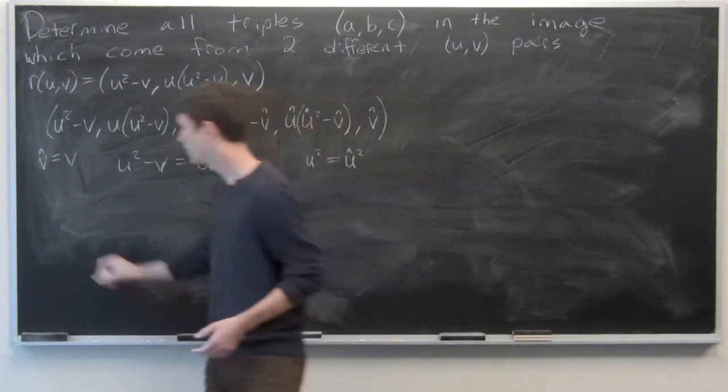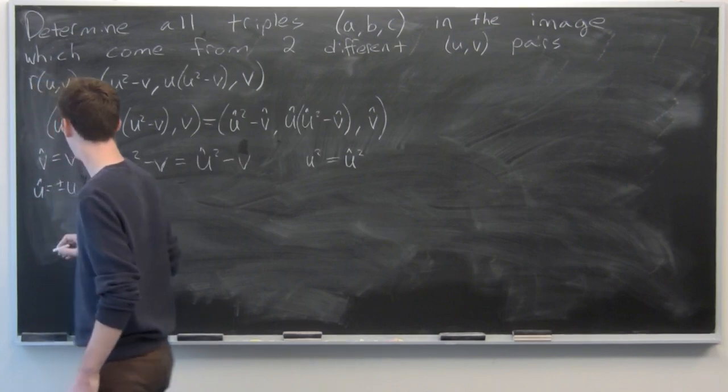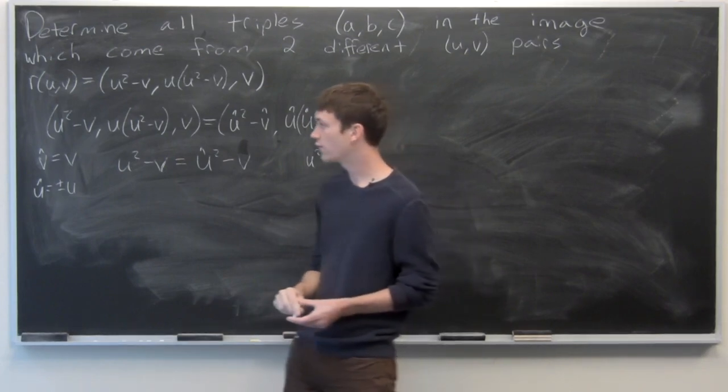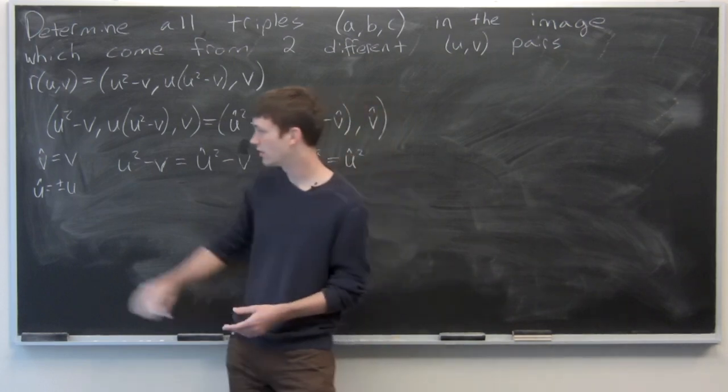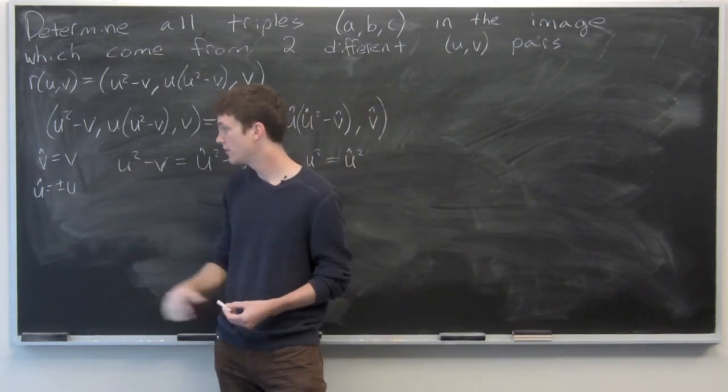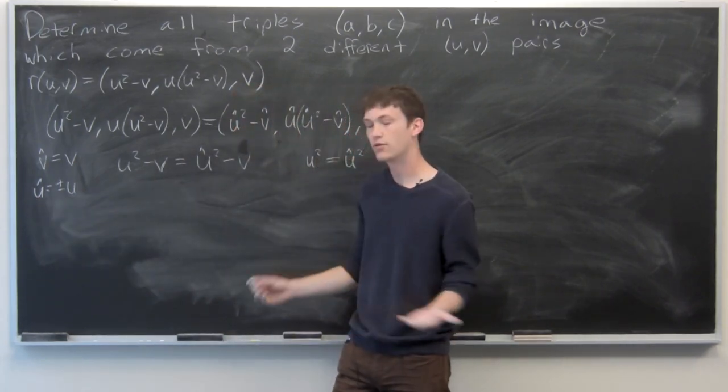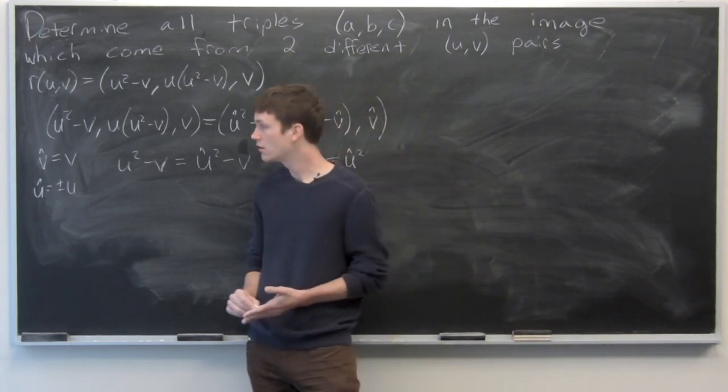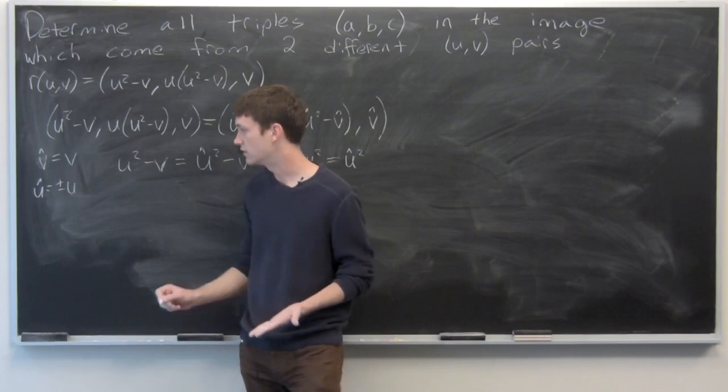Or that u-hat is equal to plus or minus u. We're looking for u-v pairs where they're not the same. Since v equals v-hat, we don't want u to equal u-hat, because that will just produce the same u-v pair. So we'll look at the case where u-hat is equal to negative u.